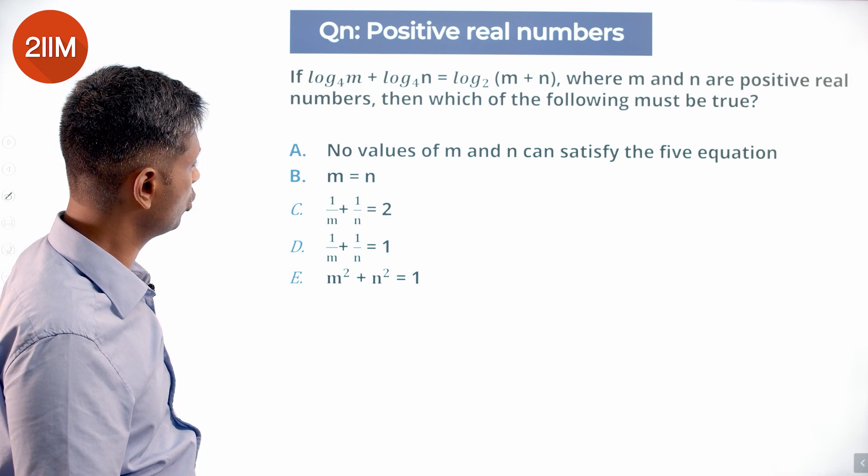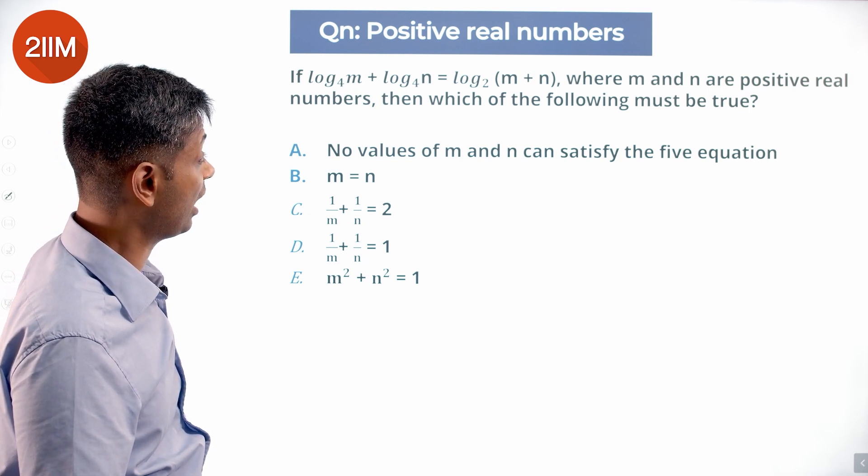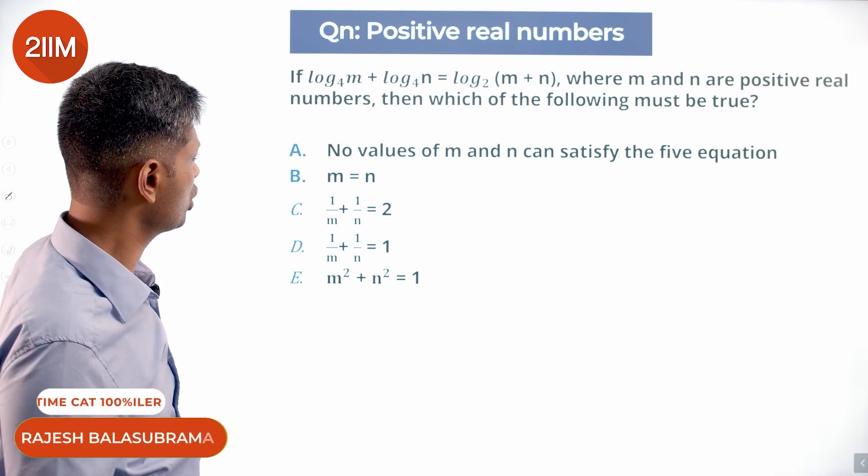Log m to the base 4 plus log n to the base 4 is log m plus n to the base 2, where m and n are positive real numbers. Which of the following must be true?